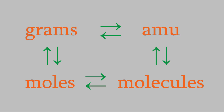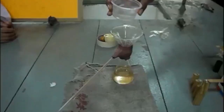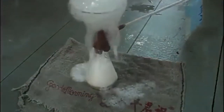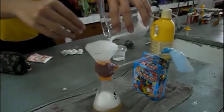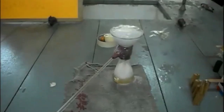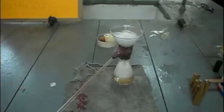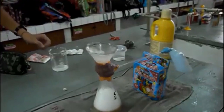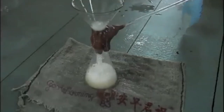So suppose you decide to perform a reaction in which you combine sodium bicarbonate and sulfuric acid. This reaction produces bubbles of carbon dioxide, and one question you might want to answer is, how much carbon dioxide will it produce? This kind of question is the most common one that chemists ask. For a given amount of reactant, how much product will we get?